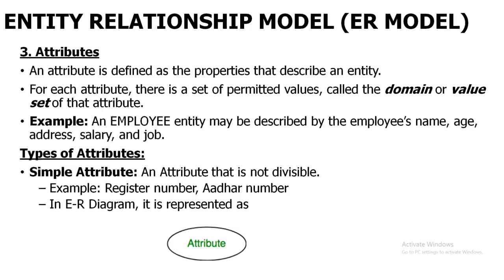For example, if you are taking an employee as an entity, for that entity employee will be having properties or attributes like employee ID, employee name, age, address, salary, and what type of job he is doing. These are the attributes for that particular entity.